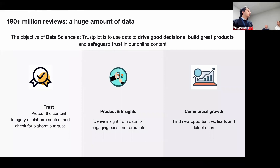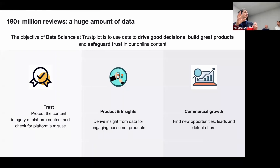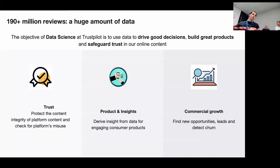For this reason Trustpilot has three data science teams. The first one is Trust, whose major focus is to protect the platform from scam, spam, and fraudulent reviews. Product and Insights deals a lot with reviews, extracting value through sentiment analysis and topic modeling for businesses, while also improving consumer experience on the website. And Commercial Growth, as the name suggests, looks for new business opportunities and detects churn.